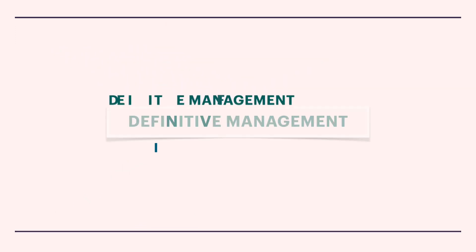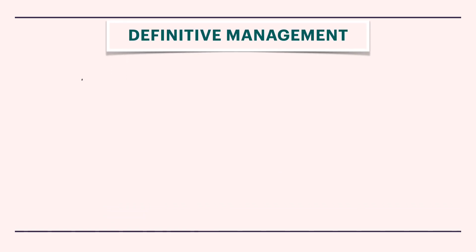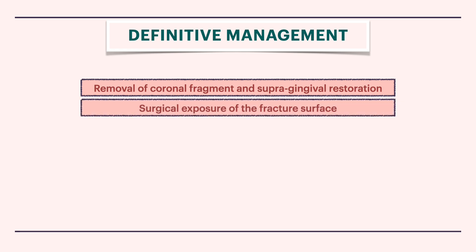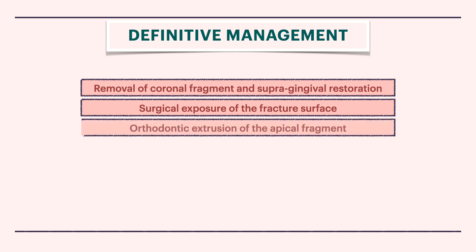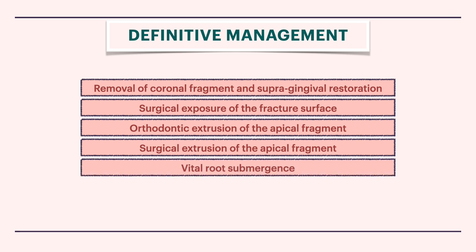Coming to the definitive management of crown root fracture, there are several treatment options that include: removal of coronal fragment and supra-gingival restoration, surgical exposure of fracture surface, orthodontic extrusion of apical fragment, surgical extrusion of apical fragment, vital root submergence, and extraction.